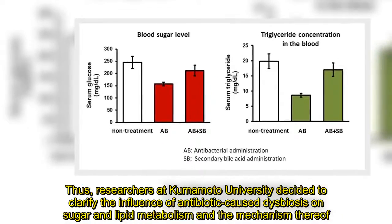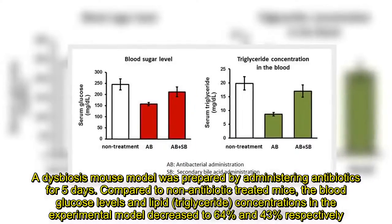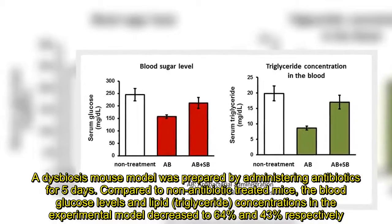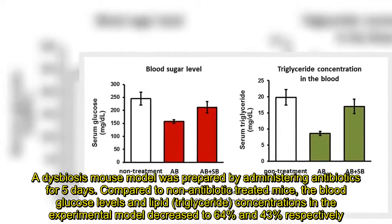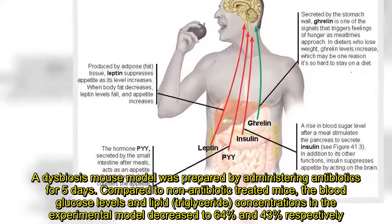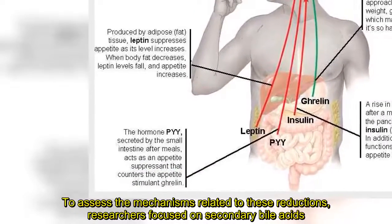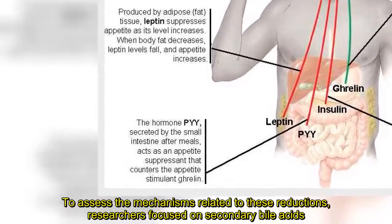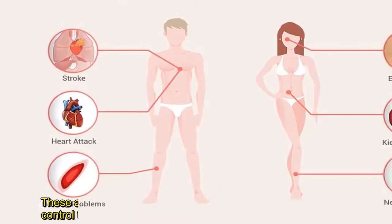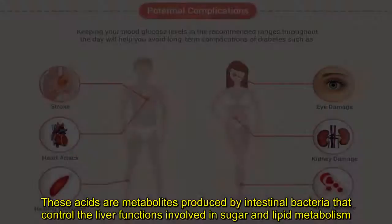A dysbiosis mouse model was prepared by administering antibiotics for five days. Compared to non-antibiotic-treated mice, the blood glucose levels and lipid concentrations in the experimental model decreased to 64% and 43% respectively. To assess the mechanisms related to these reductions, researchers focused on secondary bile acids, which are metabolites produced by intestinal bacteria that control the liver functions involved in sugar and lipid metabolism.